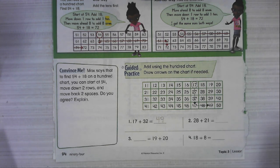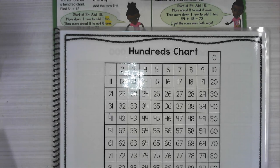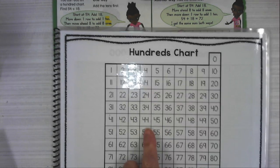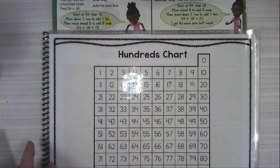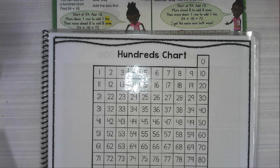Think about what he's talking about. If you move down two rows, how much have you added? We're going to use this hundreds chart to look at that.